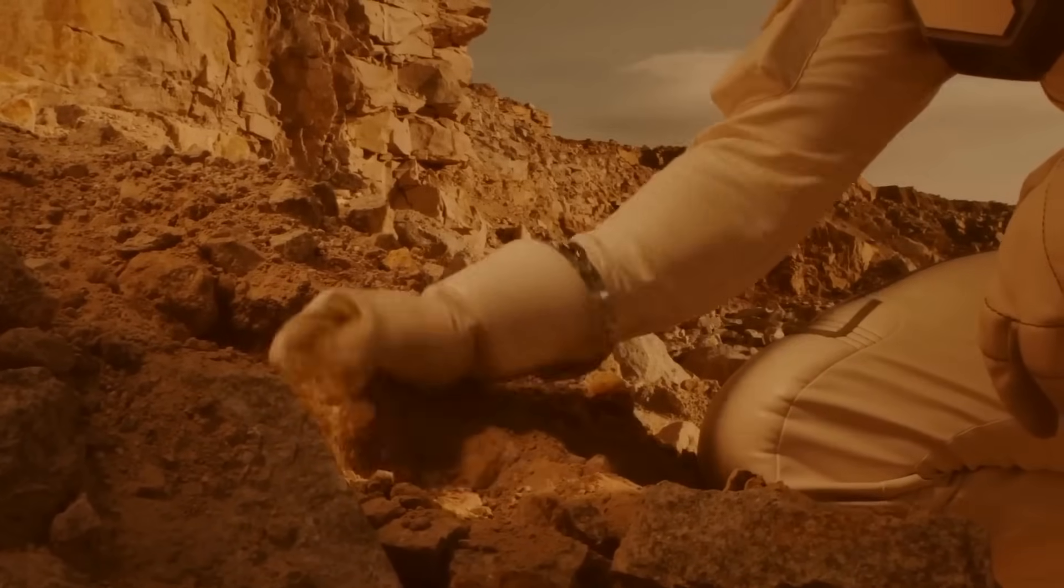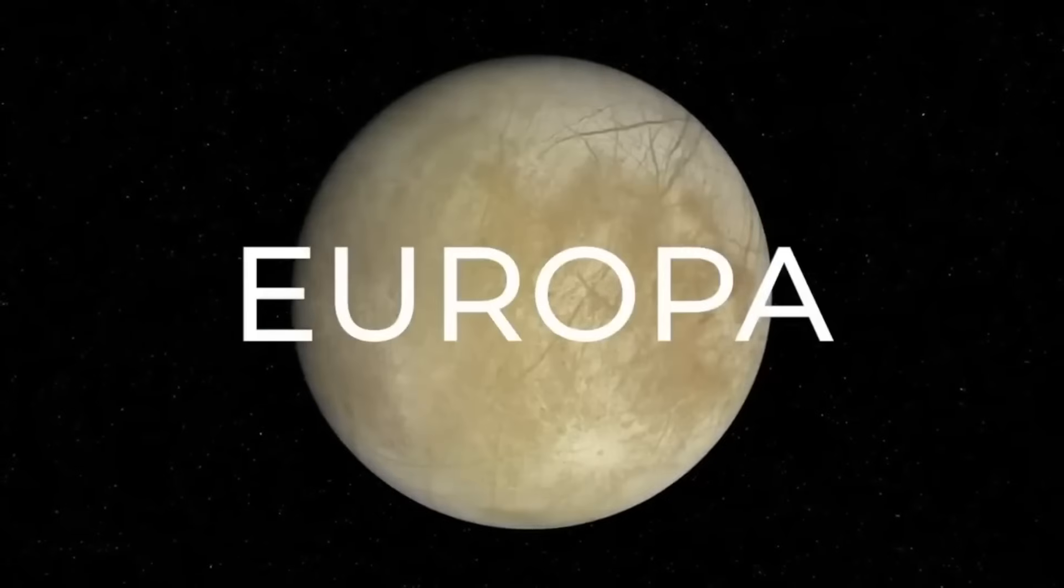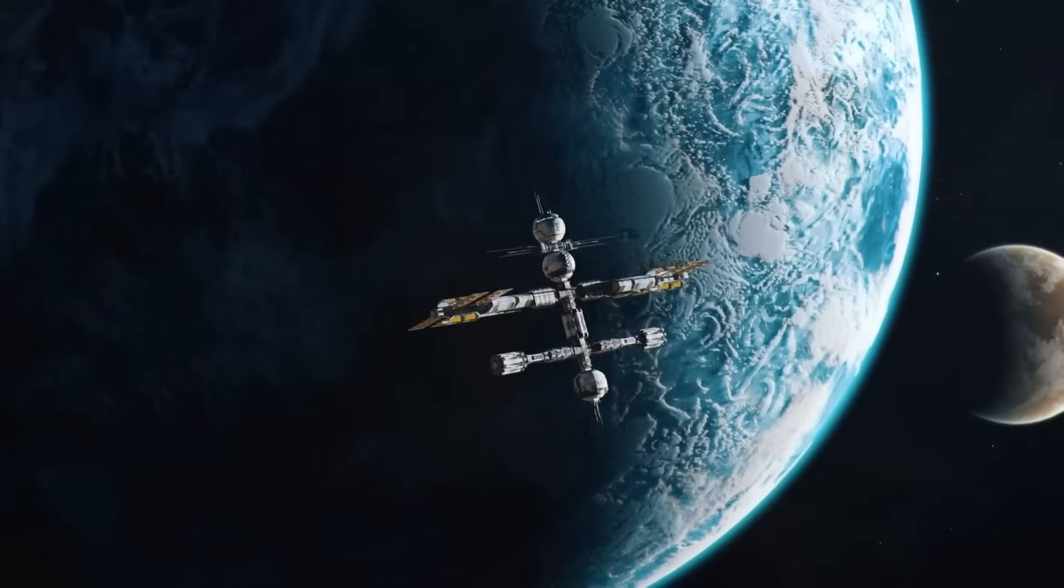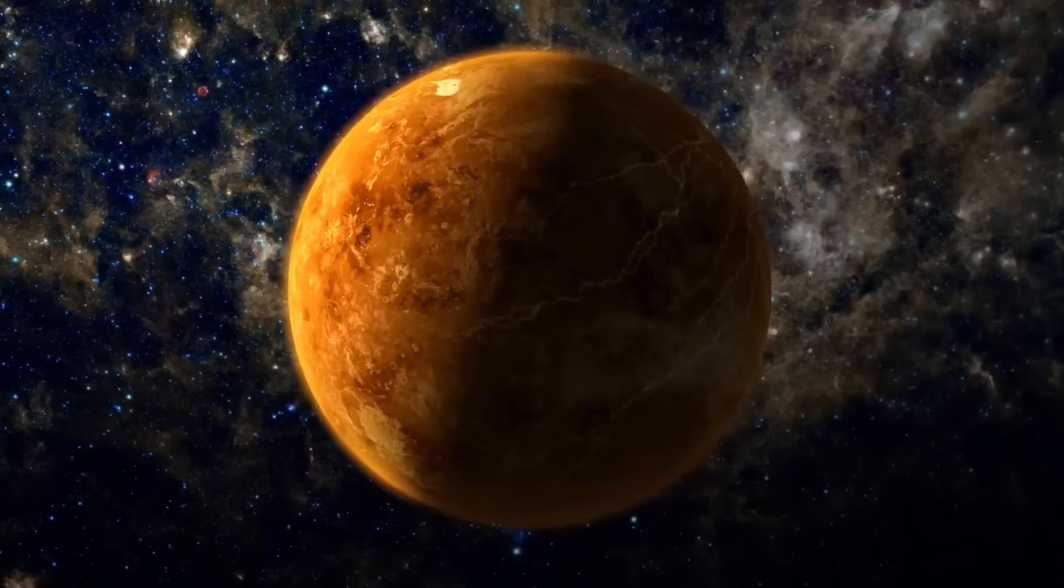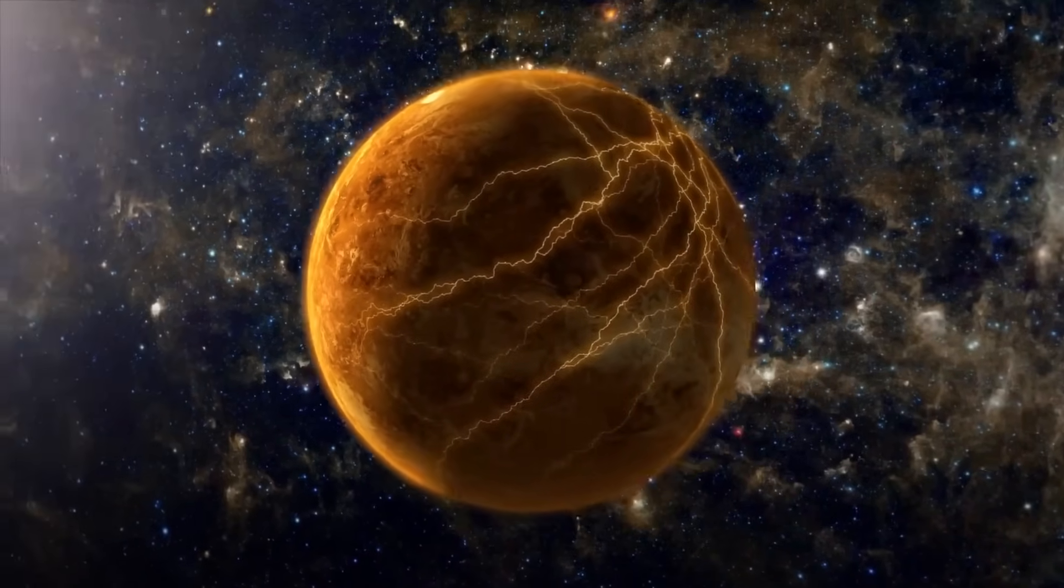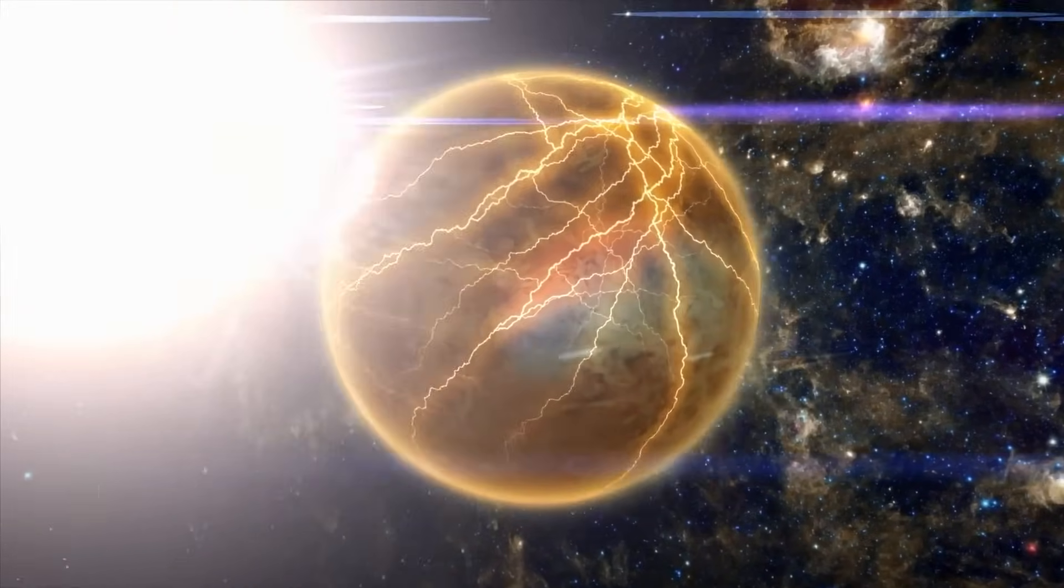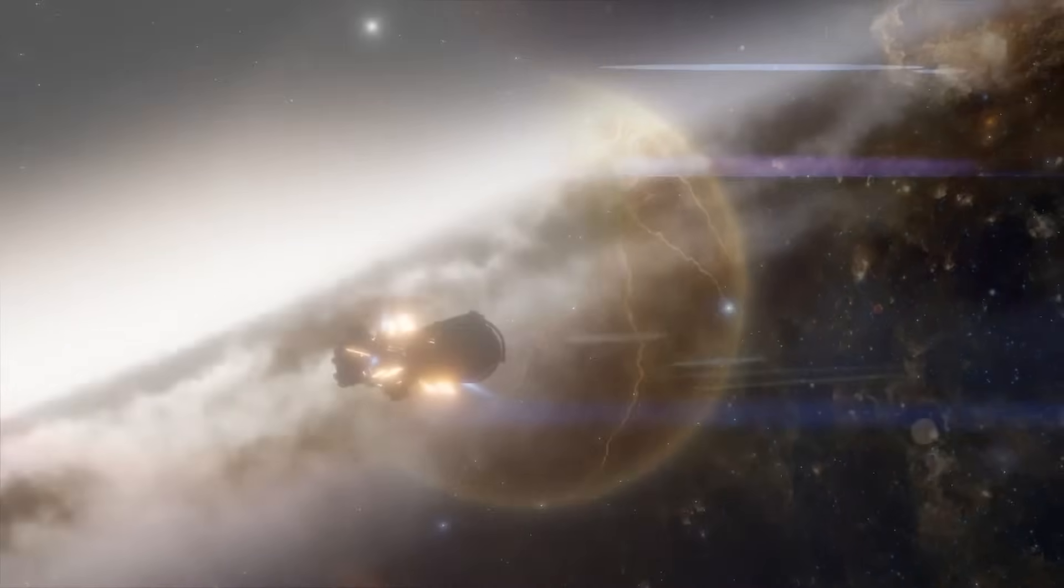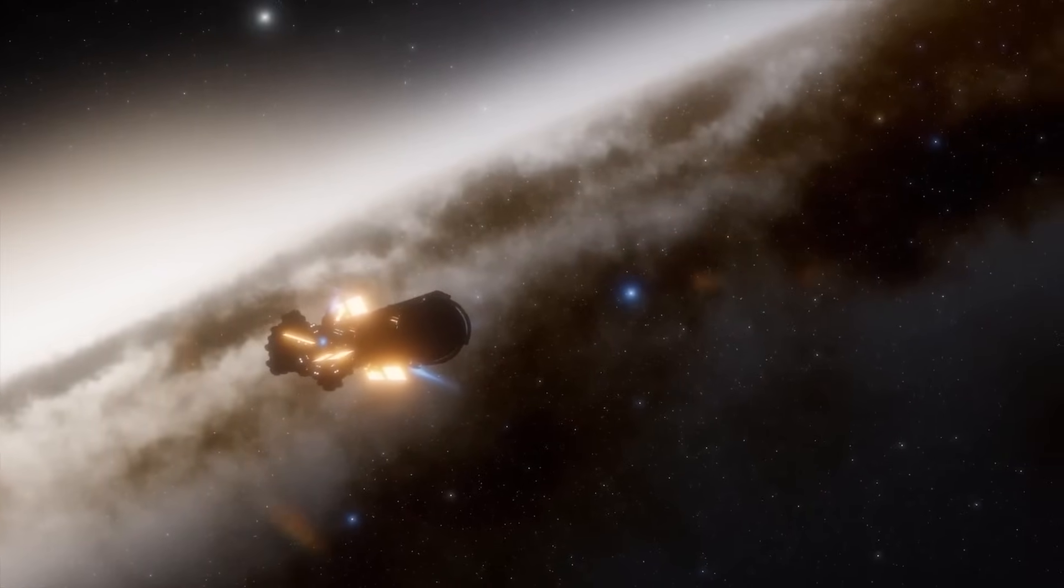He also highlights that discovering complex life, like planets or animals on Mars or Jupiter's moon Europa, would be groundbreaking. However, the paradox remains. Given the vast number of planets and the potential for life, why haven't we found any signs of other intelligent beings? Cox believes that the absence of evidence doesn't necessarily mean we're alone, but it does raise important questions about the nature of life and our place in the universe.